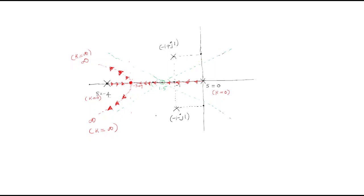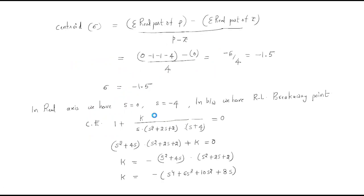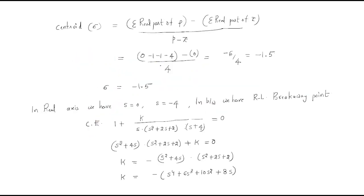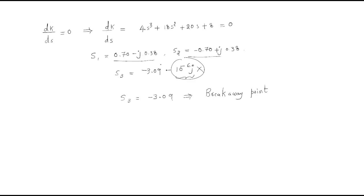In this session we will discuss root locus for the remaining two poles: minus 1 plus j1 and minus 1 minus j1. These are complex conjugate poles.